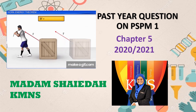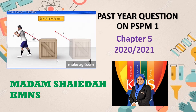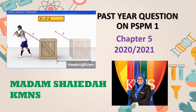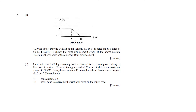Assalamualaikum, we meet again in past year questions on PSPM. Today we will talk about chapter five from PSPM 2020 and 2021. Work equals F dot s, or fs cos theta. The force in matriculation is always constant, and s represents the displacement. The difference between chapter four and chapter five is the s — when you look at the free body diagram, make sure you include the s. This is chapter five in past year exam PSPM, total marks are eight marks, which is quite significant.